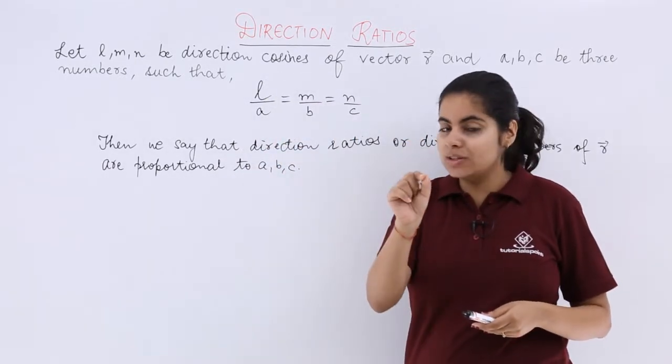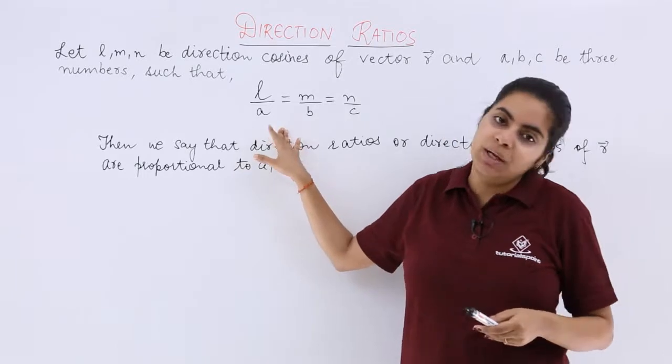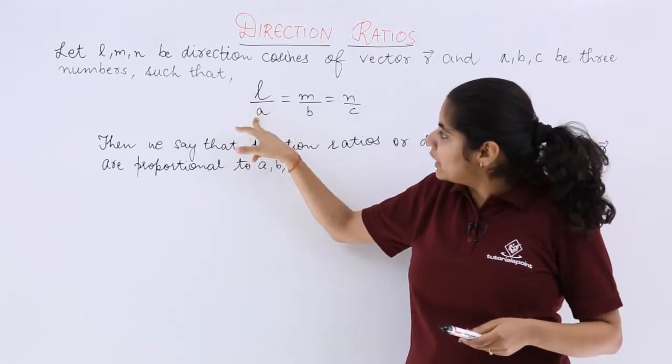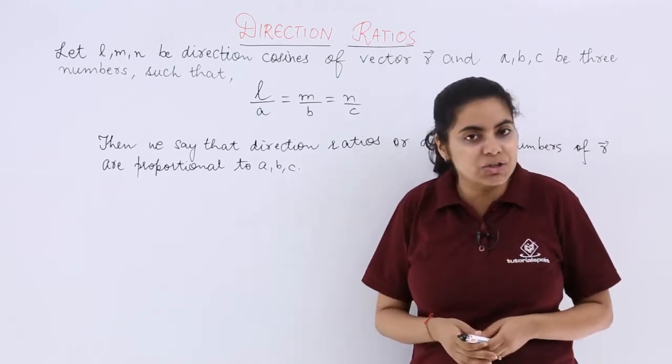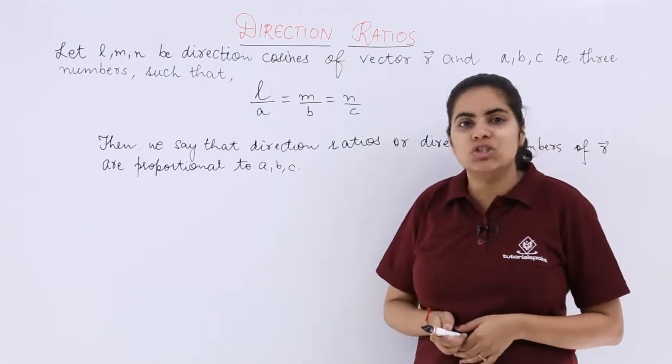Those three numbers should satisfy this particular condition: that L upon A is equal to M upon B is equal to N upon C, where A, B, C are the direction ratios and L, m, n are the direction cosines.